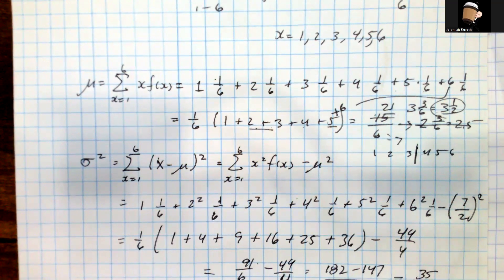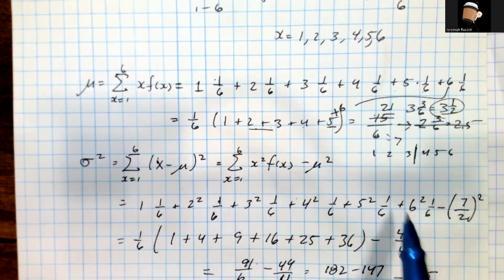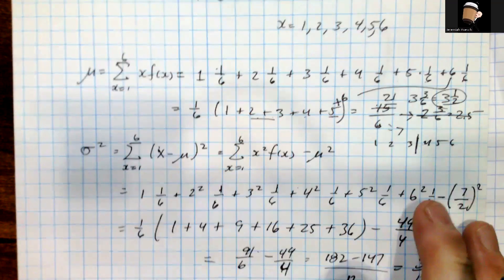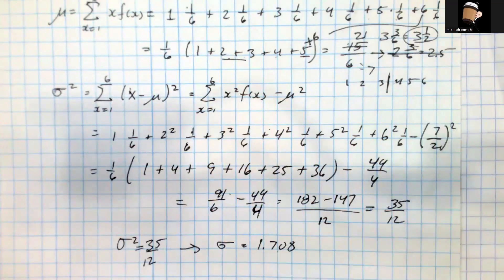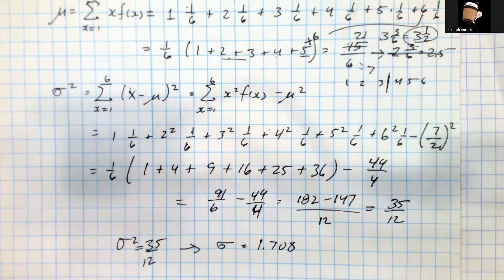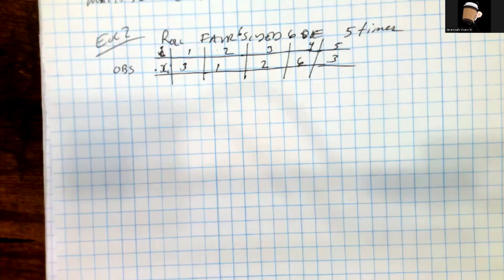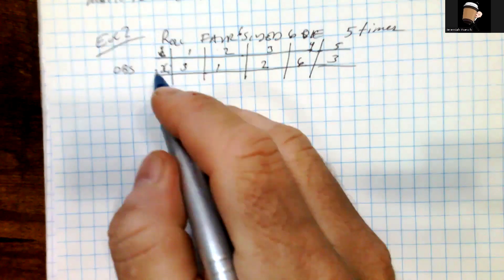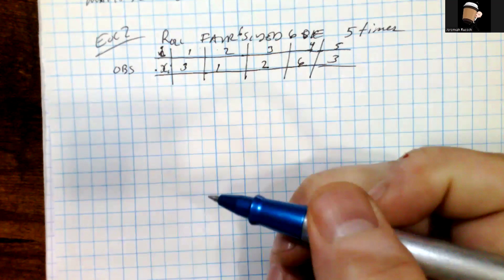Even though we didn't ask for it, there's the standard deviation. The variance is 35/12, and the mean is 7/2 or 3.5, which is exactly what we'd expect for this problem. I hope that was helpful — and yes, I did make a mistake along the way, but we caught it! Welcome back. This is Example 2 from Math 360, 1-A2, Section 1.3.2.